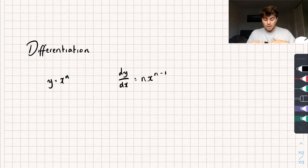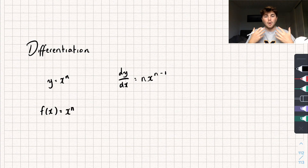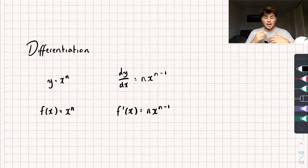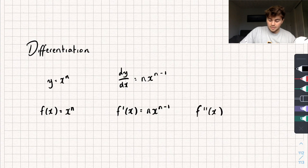That would be the first derivative of y equals x to the n. Now you might see this written slightly differently — you might see it written as f of x equals x to the power of n. Using function notation, we say f dash of x equals n x to the power of n minus one. This little dash means we've taken the first derivative. If we were taking the second derivative, which is where we differentiate the first derivative, it would be f dash dash of x. But for this video, don't worry too much about that.